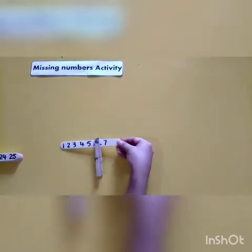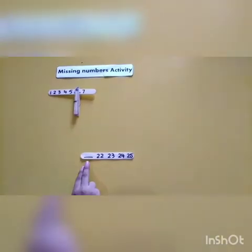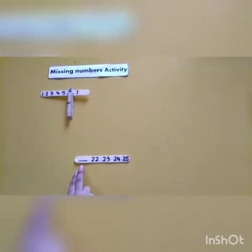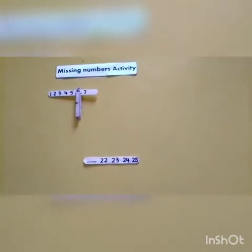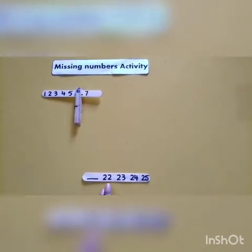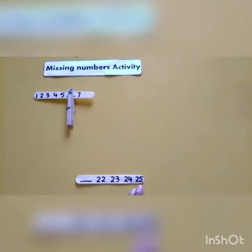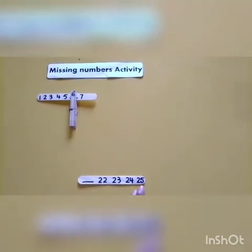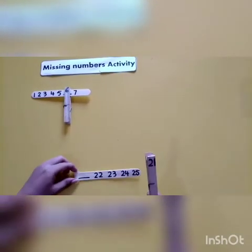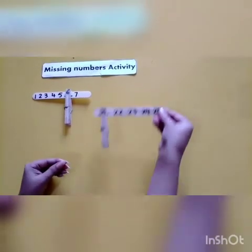Now I'm going to take another stick. It starts from 22. Do you know which number is missing in the sticks? Let's count: 22, 23, 24, 25 — but the first number is missing. Yeah, it's 21! It's complete. Now move to another step.